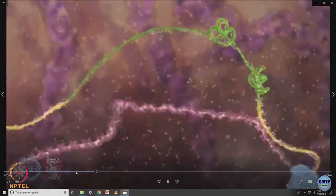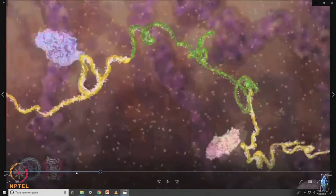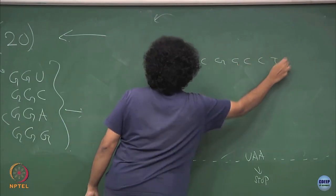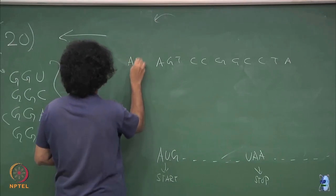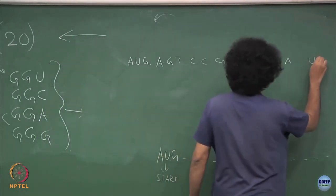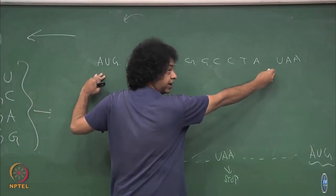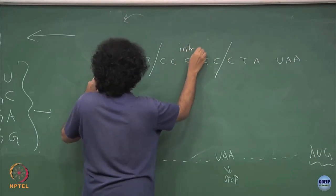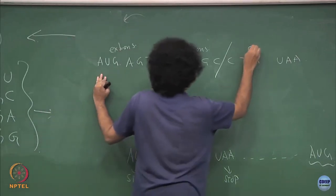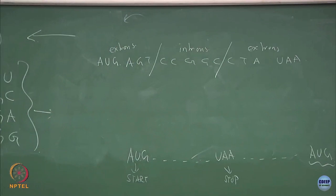The DNA contains introns and exons, which means that only some parts are required to actually produce a protein. I have this sequence — A, G, T, C, C, G and so on. It starts at an AUG, which is my start codon, and ends at a UAA, which is one of my stop codons. This whole thing is going to be produced as one mRNA. Not all of these are required to produce the protein — regions not required are called introns and regions that are required are called exons.